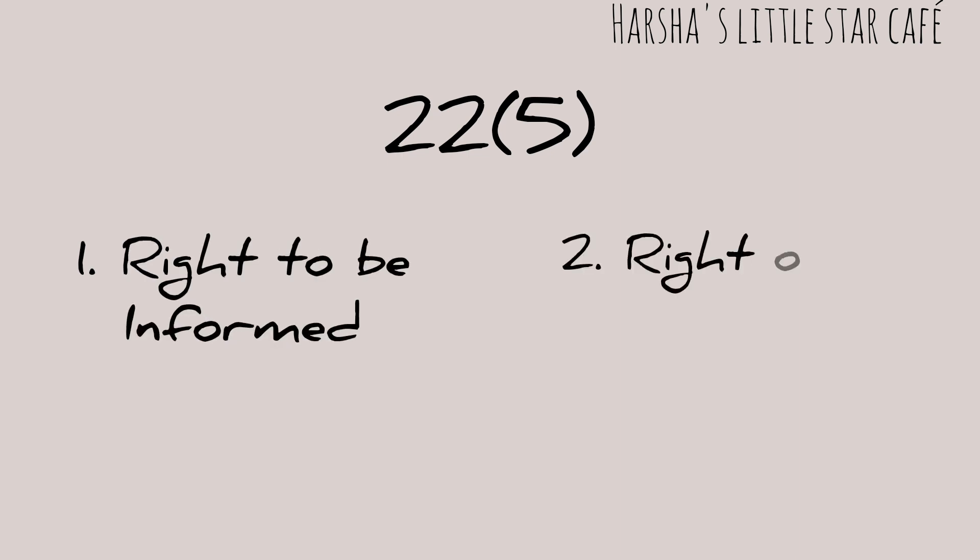Article 22 clause 5 talks about two rights: the right to be informed and the right to representation. Against preventive detention, two safeguards are provided. First, all basic information and material facts on the basis of which preventive detention occurred, including all grounds, must be communicated to the detainee. Second, along with this information, it is the duty of the government to provide the detainee with the right to make a representation.